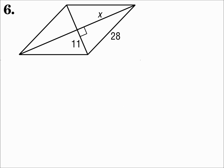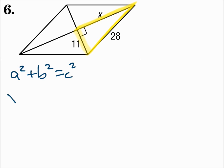Number six. We have what appears to be a rhombus with the diagonals drawn. You can see there, with the right angle in the middle, we have a right triangle. So use the Pythagorean Theorem to find x. 11 and x are the legs, and 28 is the hypotenuse.